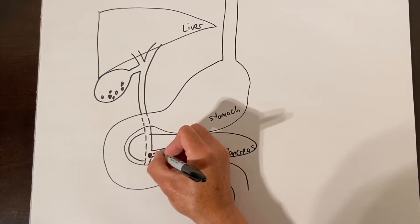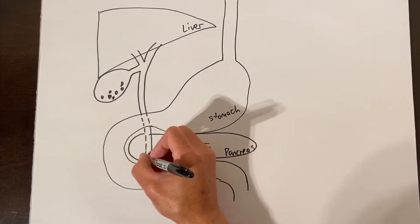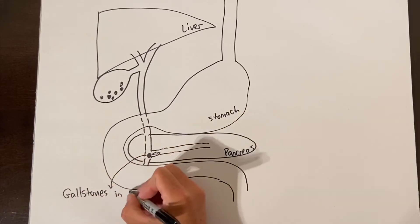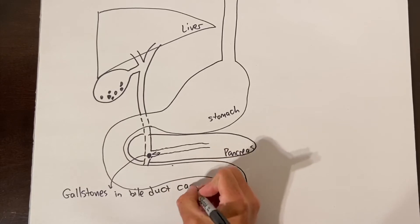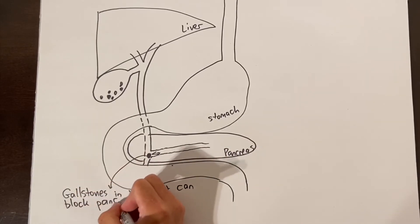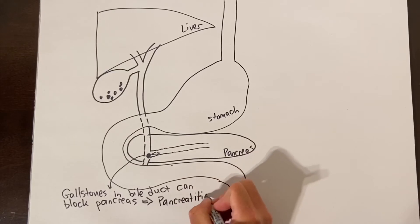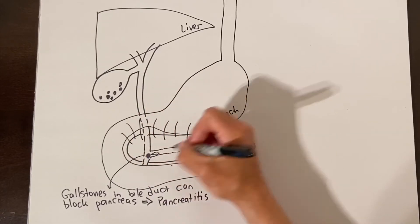The other problem with gallstones that get out of the gallbladder and into the bile duct is that this can irritate the pancreas. The pancreas juice likes to drain into the same area as the bile and if the gallstones irritate the pancreas drainage this causes inflammation of the pancreas called pancreatitis.